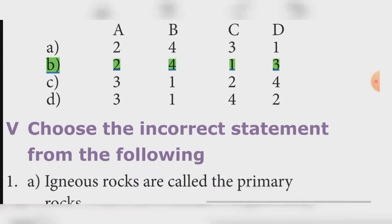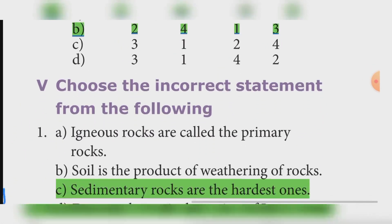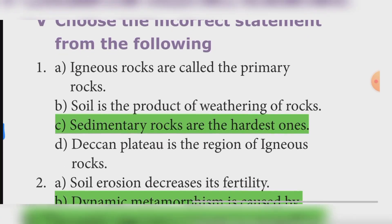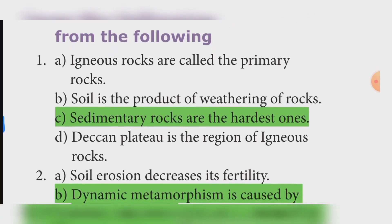Choose the incorrect statement. First set: Igneous rocks are called primary rocks; Soil is the product of weathering of rocks; Sedimentary rocks are the hardest ones; Deccan plateau is the region of igneous rocks. Answer: Option C — Sedimentary rocks are the hardest ones (this is incorrect).